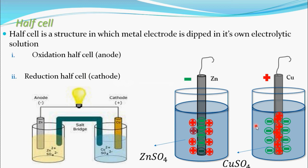This is about half cells. In the next video, I will explain more clearly about the oxidation half cell — why it attains a negative charge, what is its electrode potential, what is the definition of electrode potential, and what these charges are. Everything will be explained in the next video.